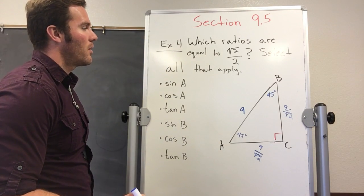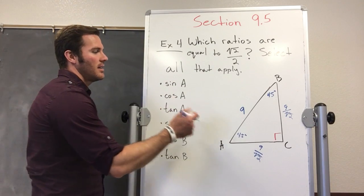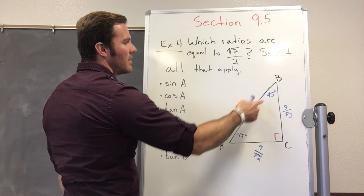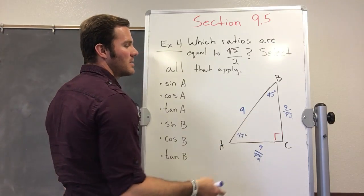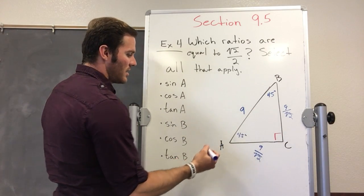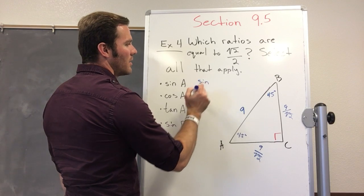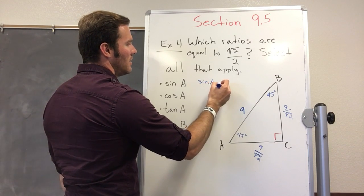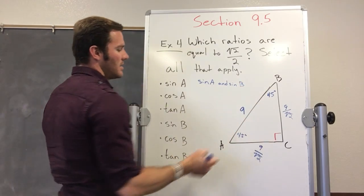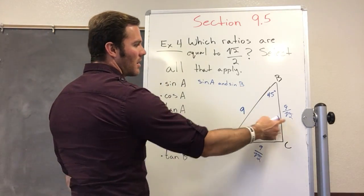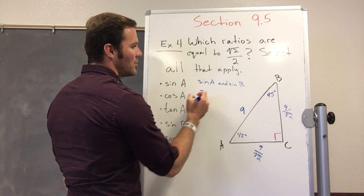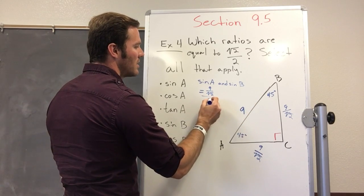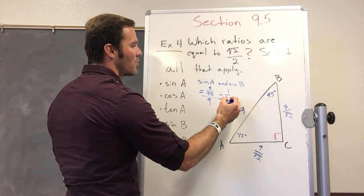Now, let's just go from the first one. Sine A. Sine is opposite over hypotenuse. If I take the sine of this way or this way, it's going to be the same. So sine will be sine A and sine B. I'm just going to write both right there. Sine A and sine B are going to have the same thing, same ratio, which is opposite 9 over square root of 2 over hypotenuse, 9. Which comes out to be 1 over the square root of 2.